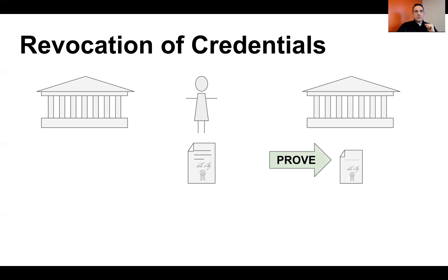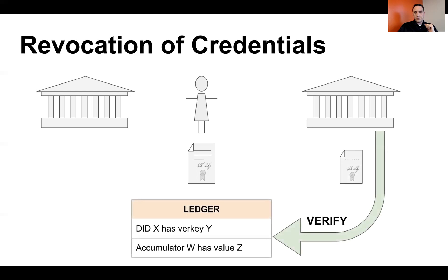How does the relying party actually decide whether to trust this credential? The answer is that we have to use a ledger. The ledger has two important pieces of information on it. One is a piece of information that says that DIDX — which we will assume was the DID that the issuing institution, the driver's license division, used to issue that credential — has a particular verification key. This is used so that the relying party can check to see whether the digital signatures are legitimate.